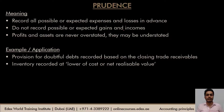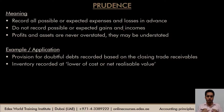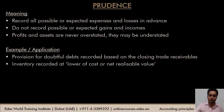Examples of prudence include provision for doubtful debts — reducing profits and assets for an expected future loss — and recording inventory at the lower of cost or net realisable value (NRV). This records future losses in advance rather than future profits. There is a dedicated video in the IGCSE accounting series explaining the inventory principle in detail.